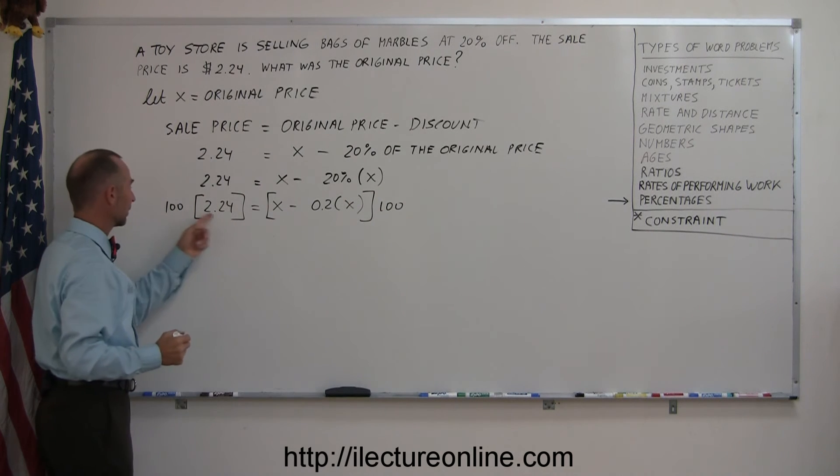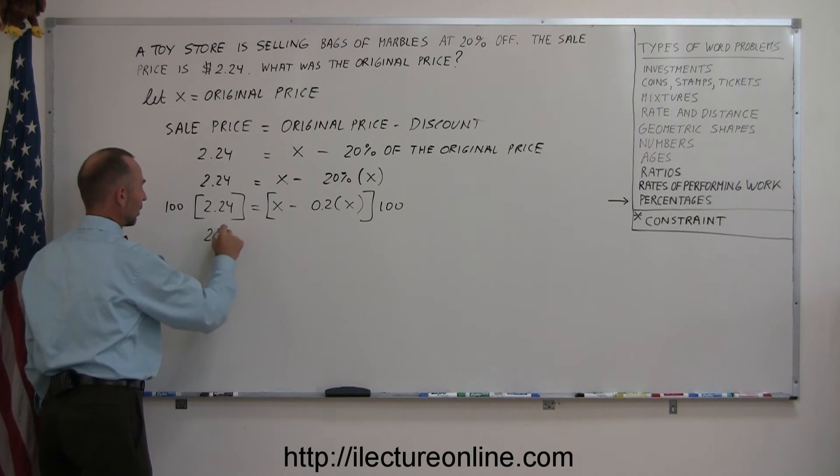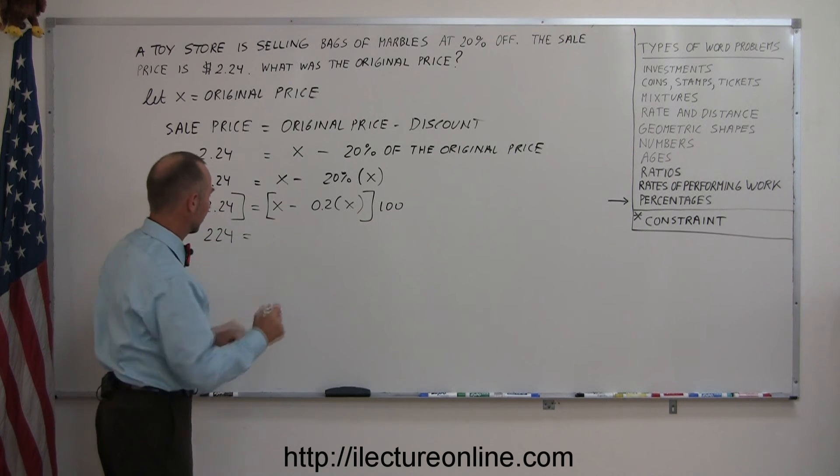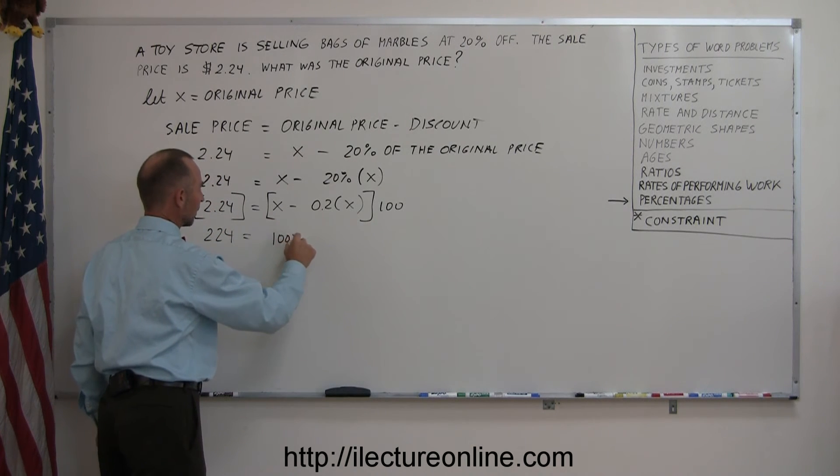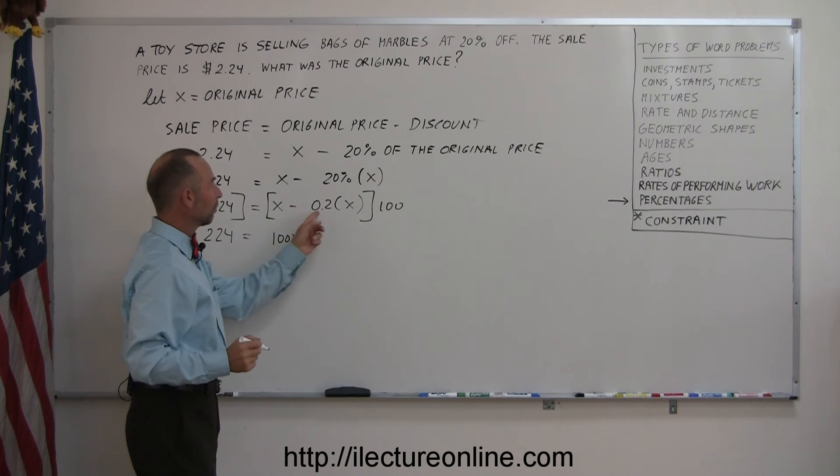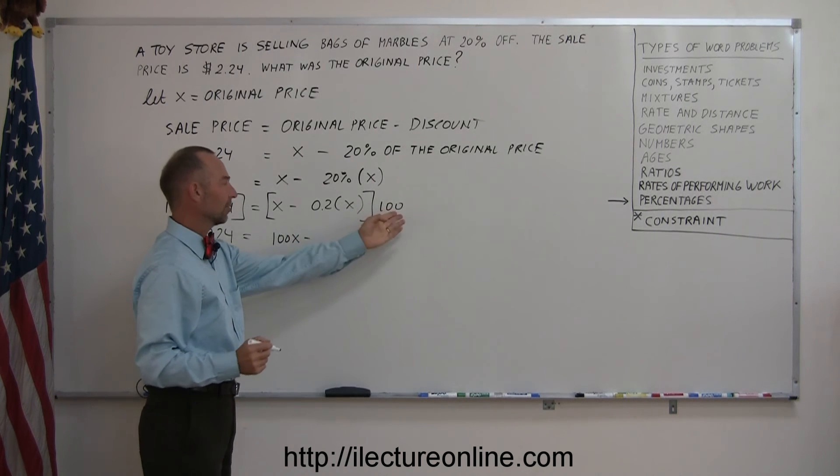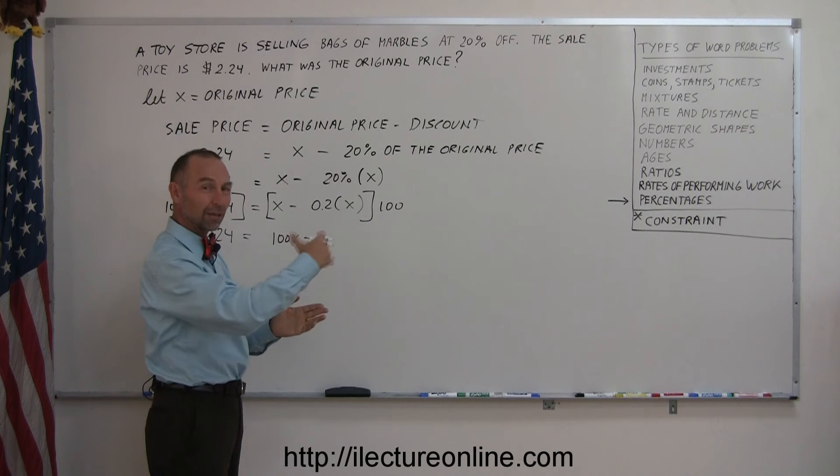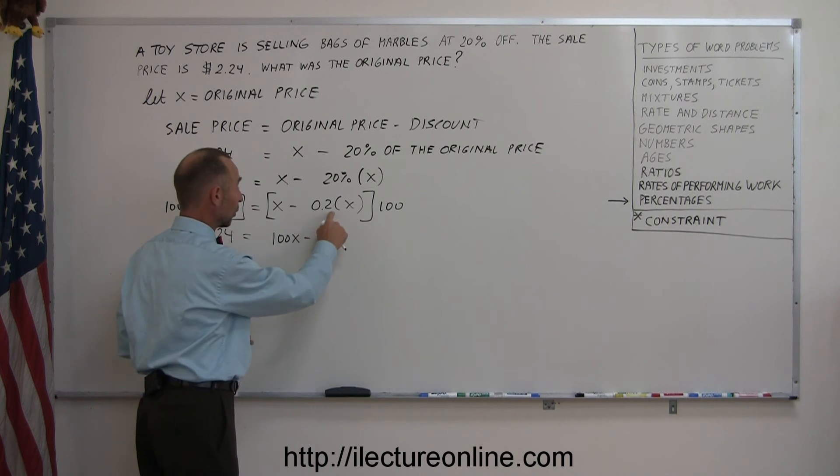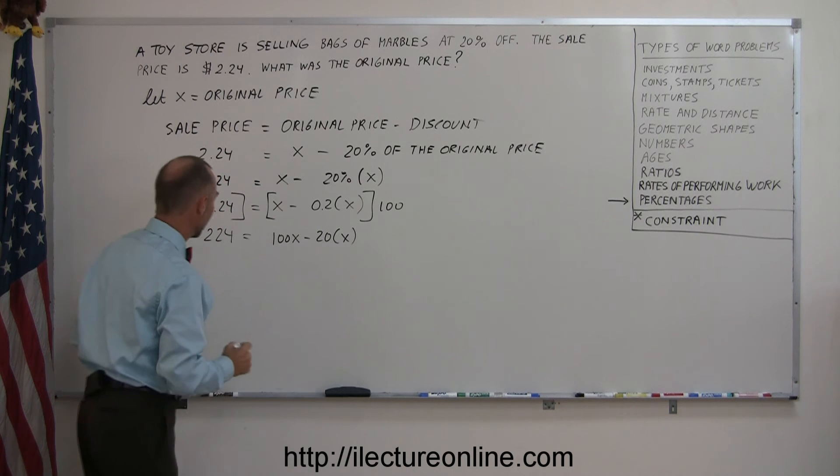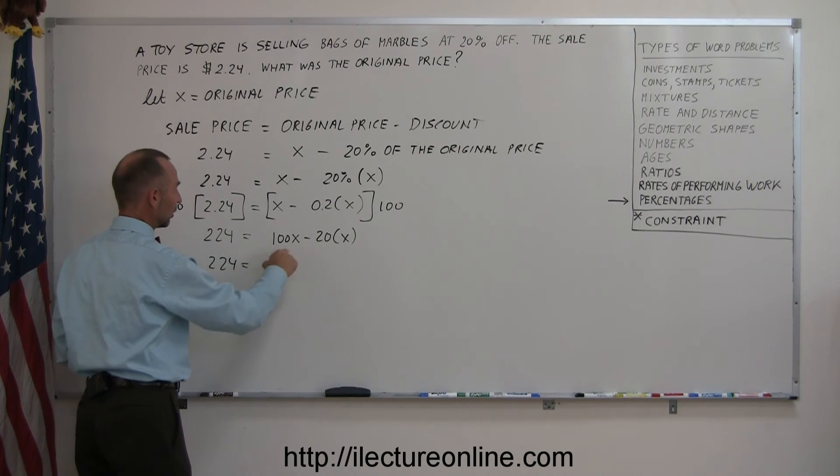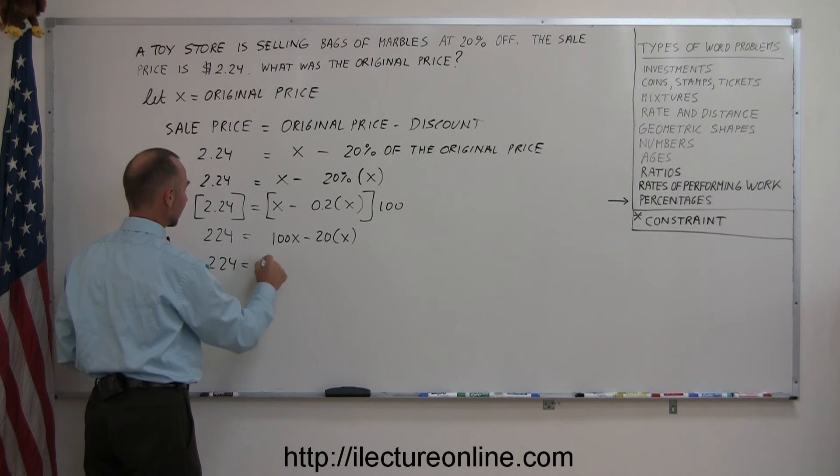All right, 100 times this, that gives us 224. 100 times X, that's 100X, minus 0.2 times 100, that means when you multiply times 100, it's like moving the decimal place over two places, so that's 1, 2, that gives us 20 times X. And so 224 equals 100X minus 20X, that's 80X.